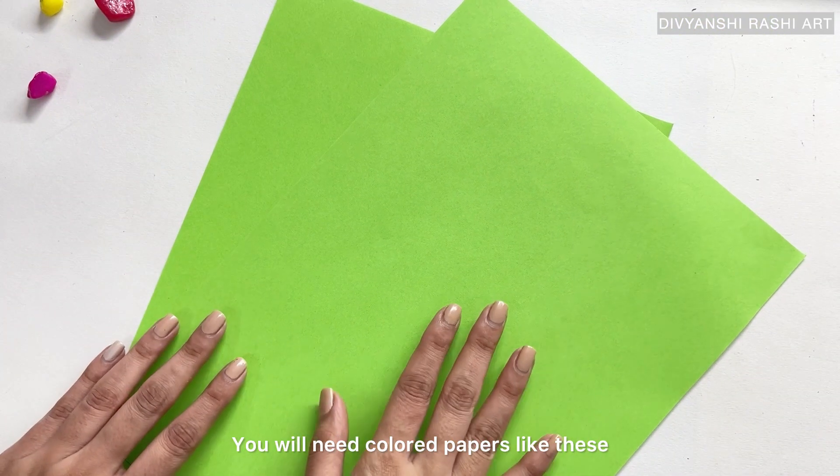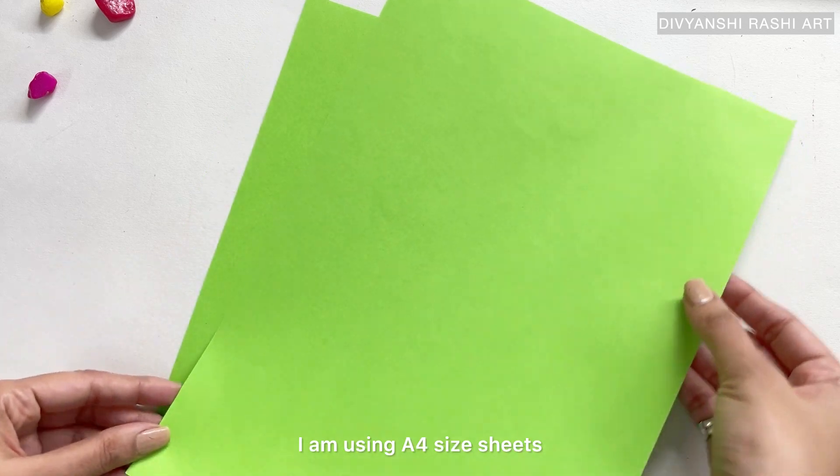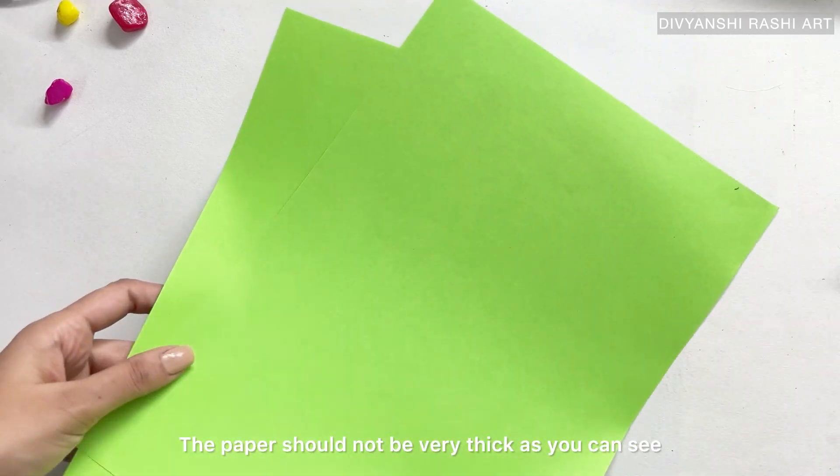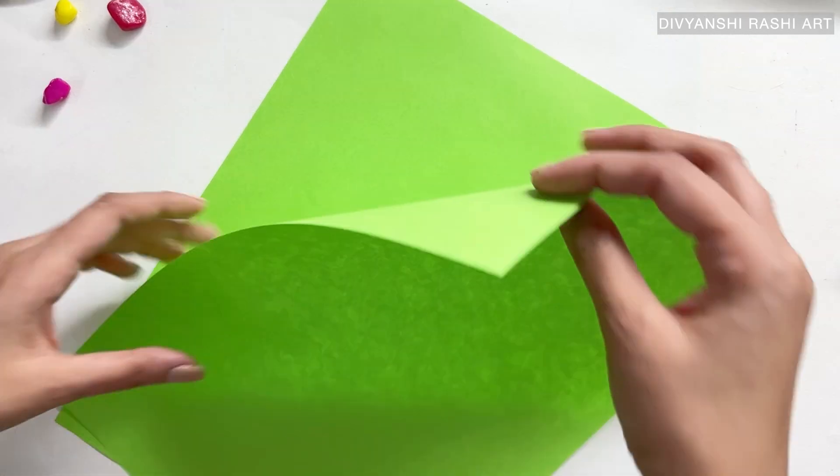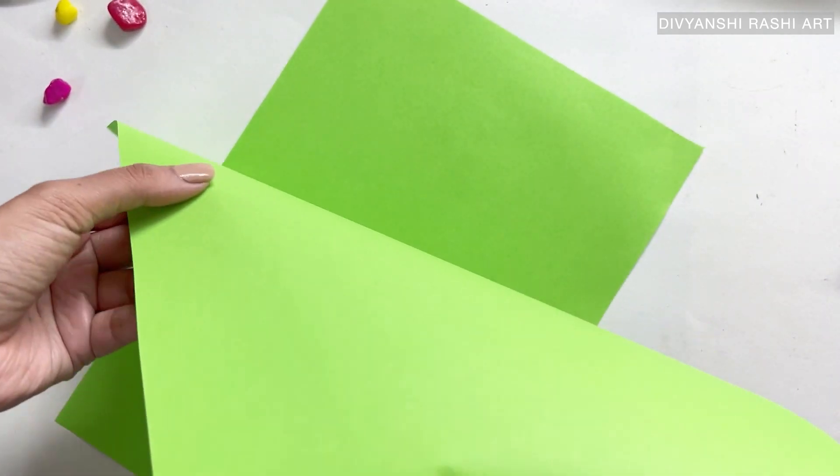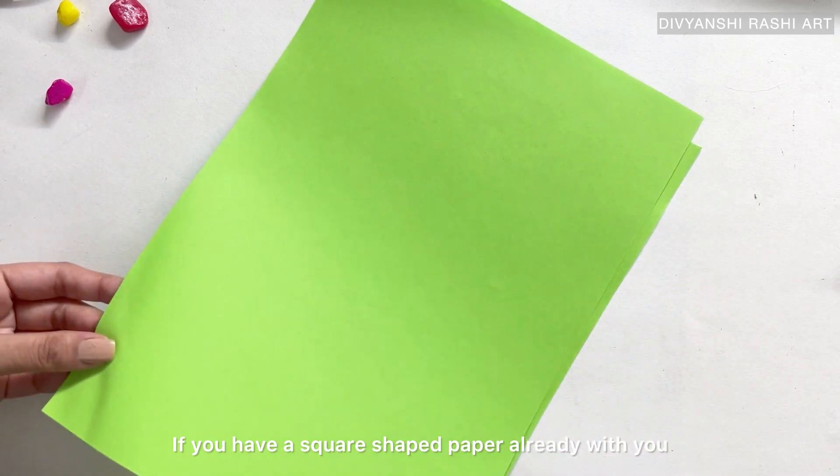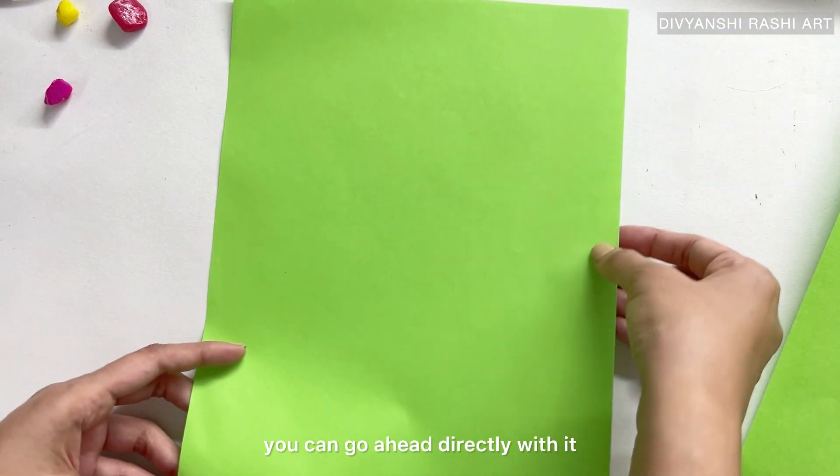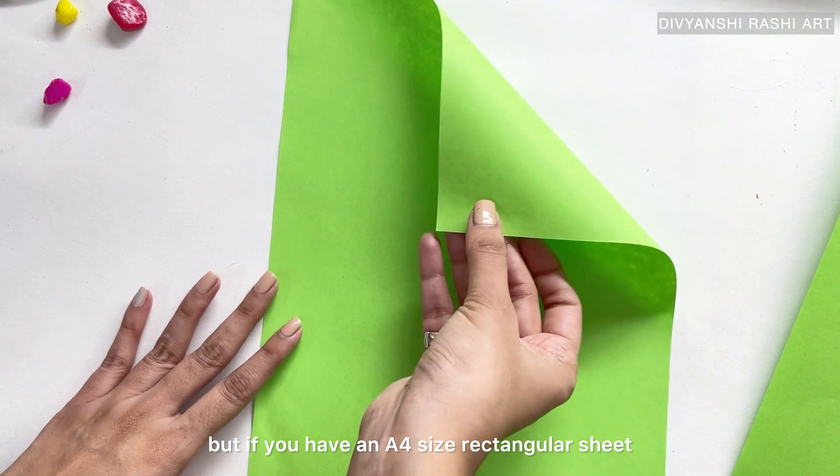You will need colored papers like these. I'm using A4 size sheets. The paper should not be very thick—as you can see, mine is also not very thick and can be easily folded. If you have a square-shaped paper already with you, you can go ahead directly with it.